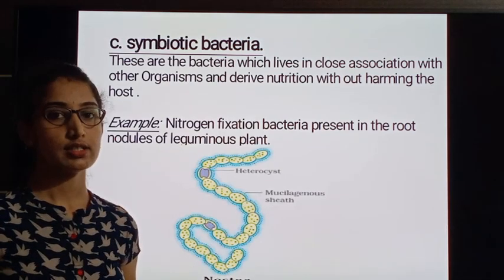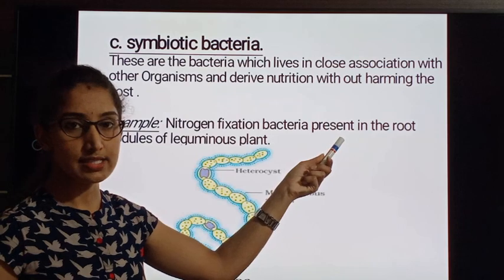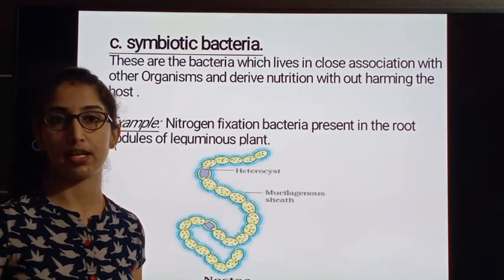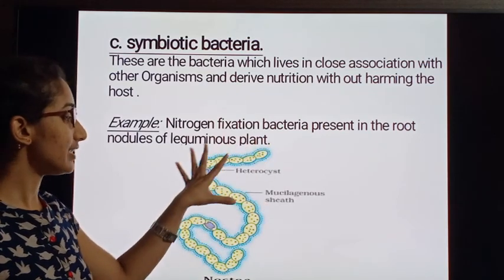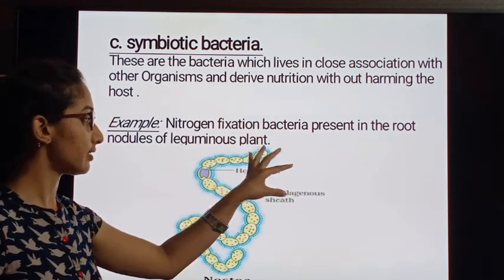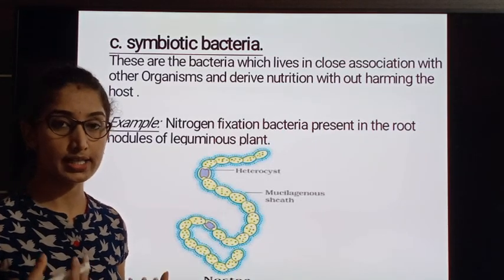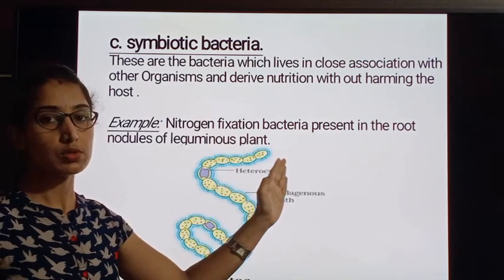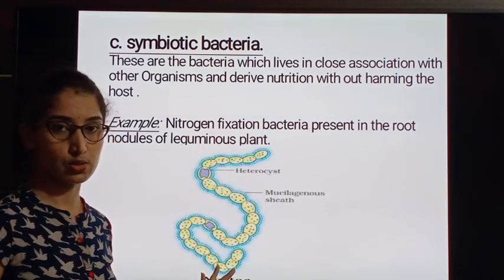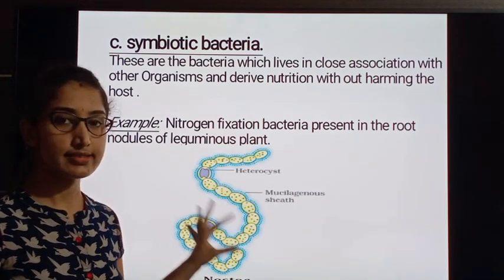A well-known example is nitrogen-fixation bacteria present in the root nodules of leguminous plants. We have taken the example of nostoc. The complete body of nostoc is made of numerous cells, and in between those cells there is a presence of heterocyst cells, which play a very important role in generating new cells. This looks like a beaded structure.